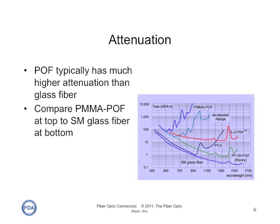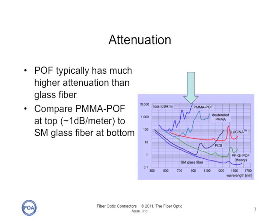Another big difference between glass fiber and plastic fiber is the attenuation coefficient of the fiber. POF typically has a much higher attenuation than glass fiber. On the graph to the right, take a look at the PMMA POF at the top of the chart and the single-mode glass fiber at the bottom. PMMA POF has an attenuation coefficient of about 100 dB per kilometer, while single-mode glass fiber has an attenuation coefficient of well under one dB per kilometer.